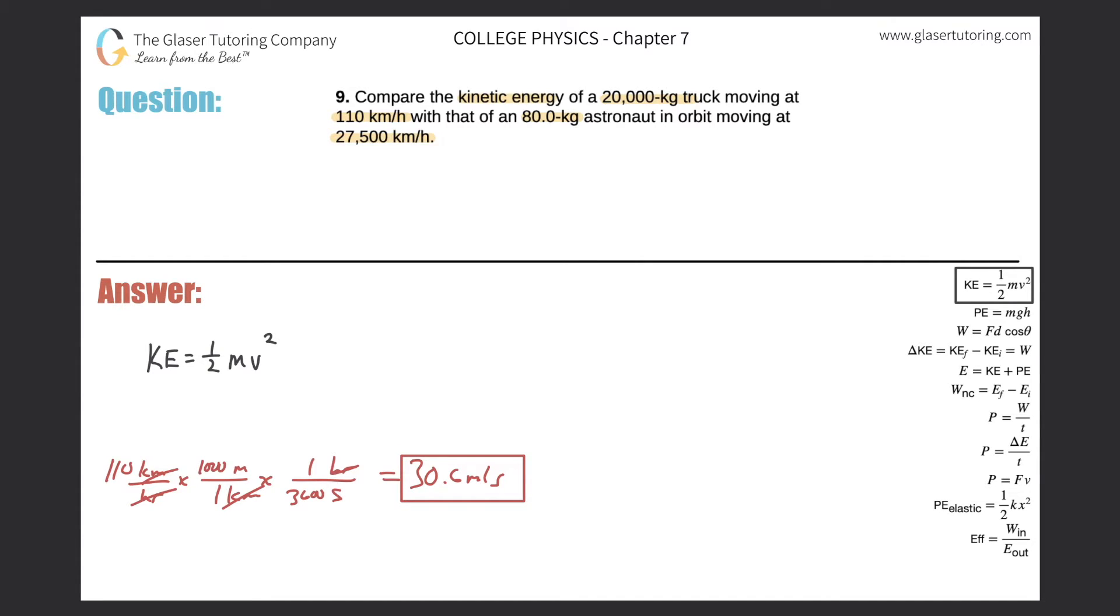So all we got to do now, the kinetic energy of the truck should be equal to 1 half multiplied by the mass of that truck, 20,000 kilograms, multiplied by then its velocity in meters per second squared. So this is easy. So the kinetic energy of the truck should be equal to, so we get 0.5 times 20,000 times 30.6 squared. So we get 9.36.